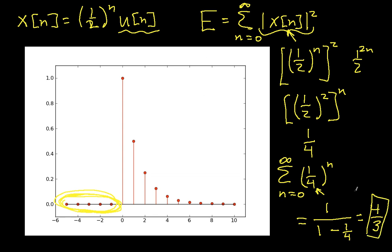If the energy is finite, then the power — the average over from minus infinity to plus infinity of these terms — is going to be 0. To have non-zero power would require spreading that finite energy of 4/3 out over an infinite number of terms, which isn't possible. If you're going to have non-zero power, the energy has to be infinite. We've covered two examples; in part two, we'll go through the other two. Thanks, and stay tuned.